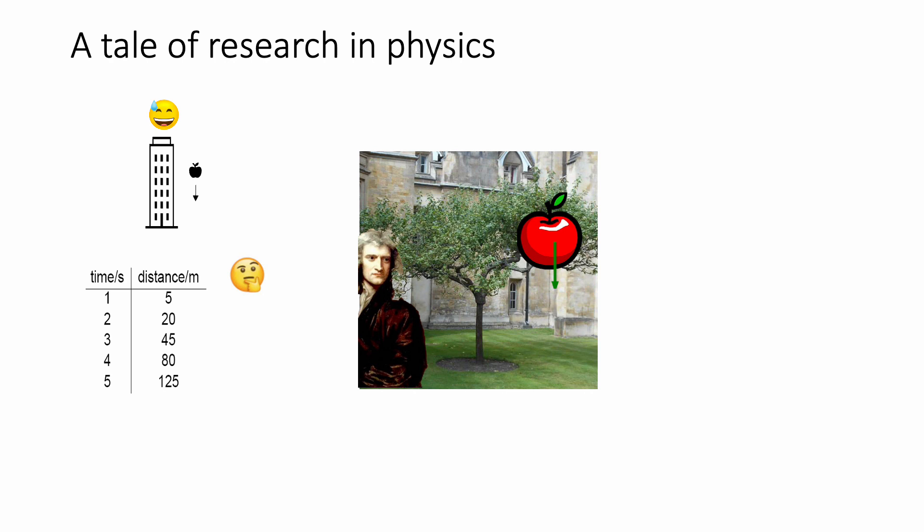Since you are a physicist, you wonder if there is any pattern in the data. You stare at it for a while, and you realize that 20 is 5 times 4, 45 is 5 times 9, 80 is 5 times 16 and so on. You also realize that 4, 9 and 16 are the squares of 2, 3 and 4. You just found that the distance always equals 5 times the square of the time.